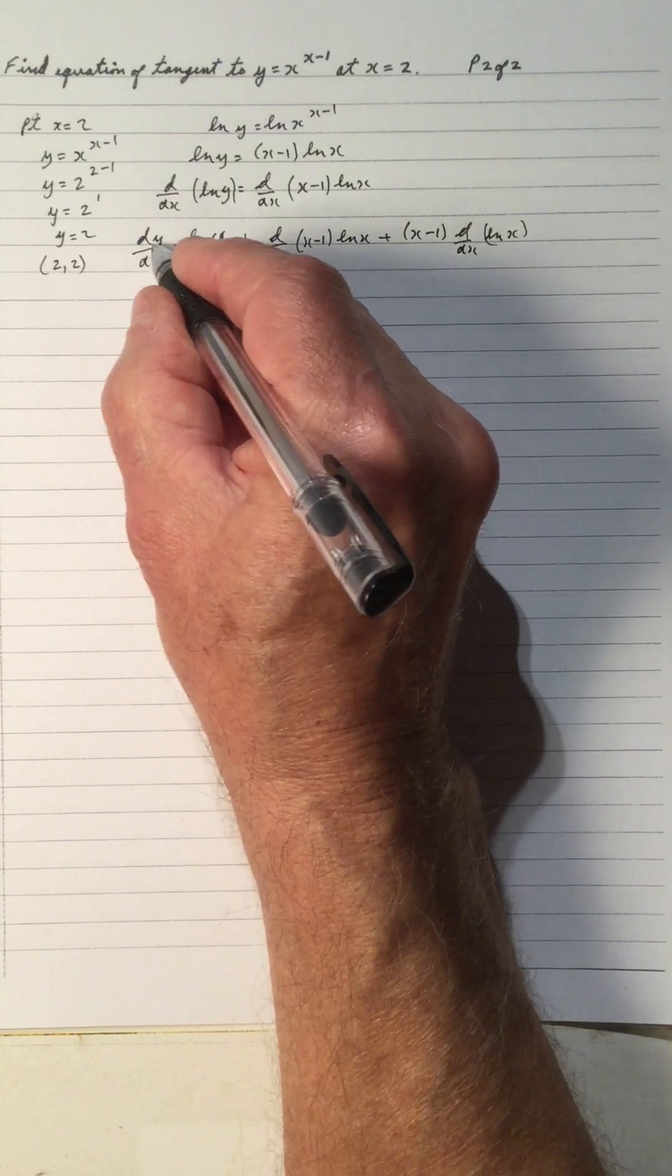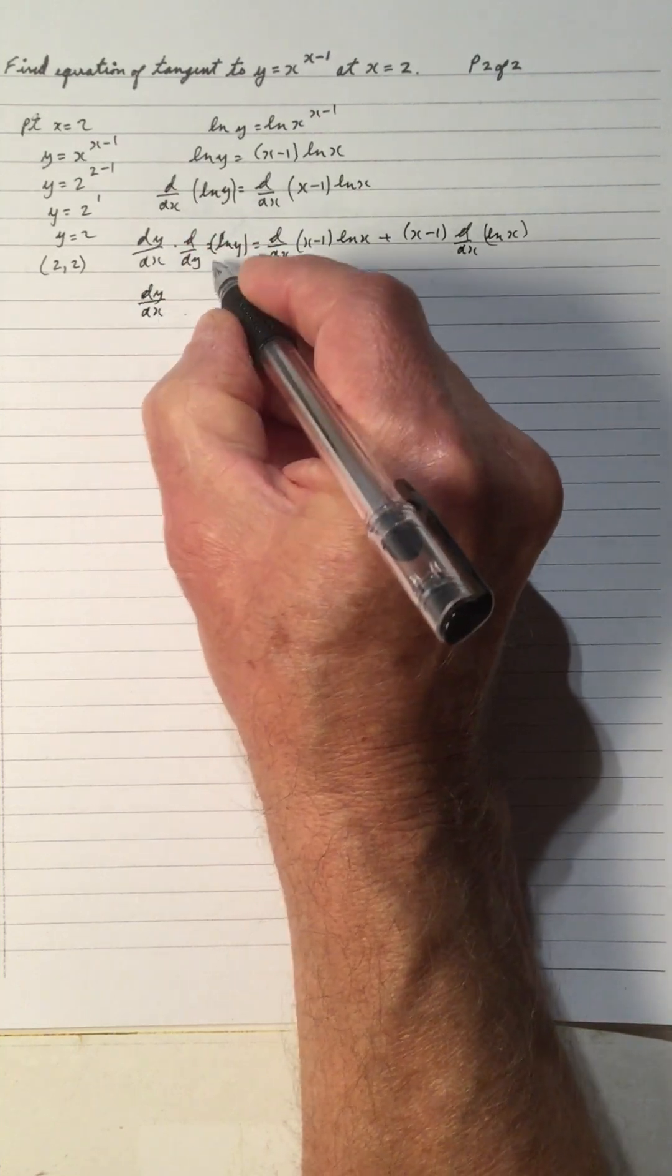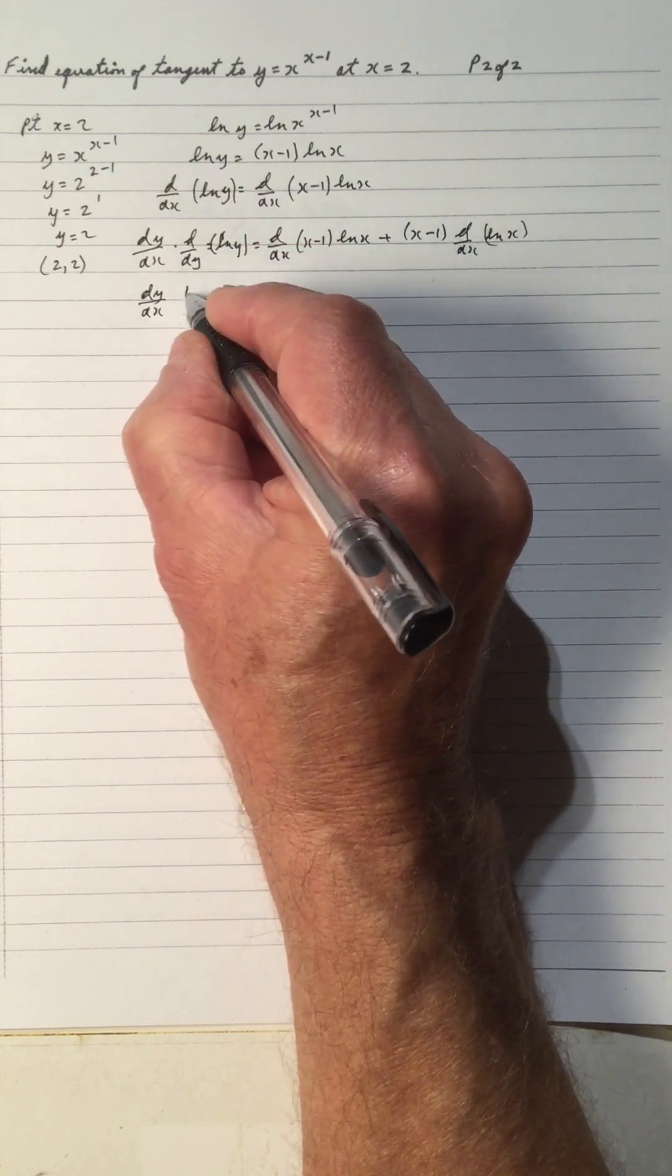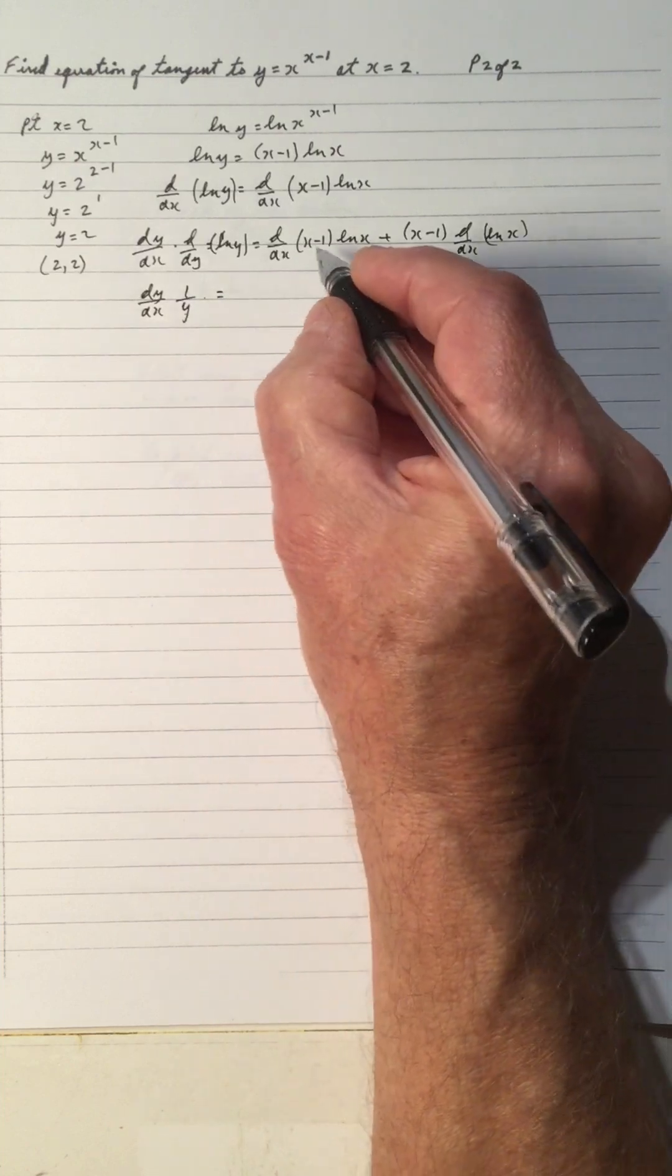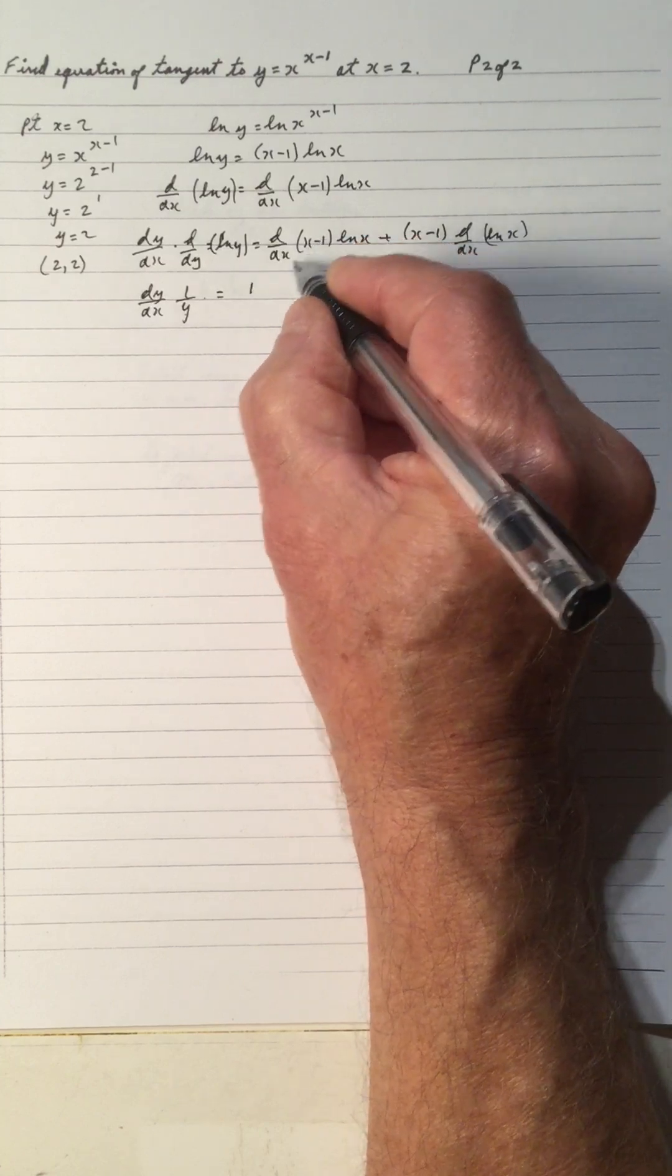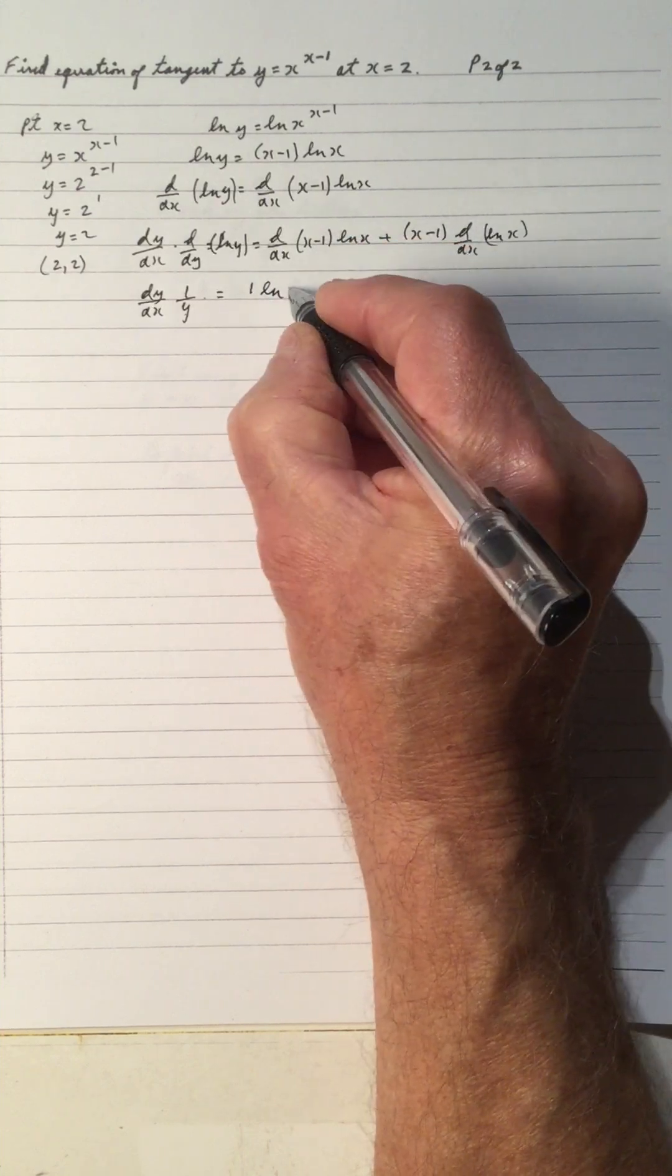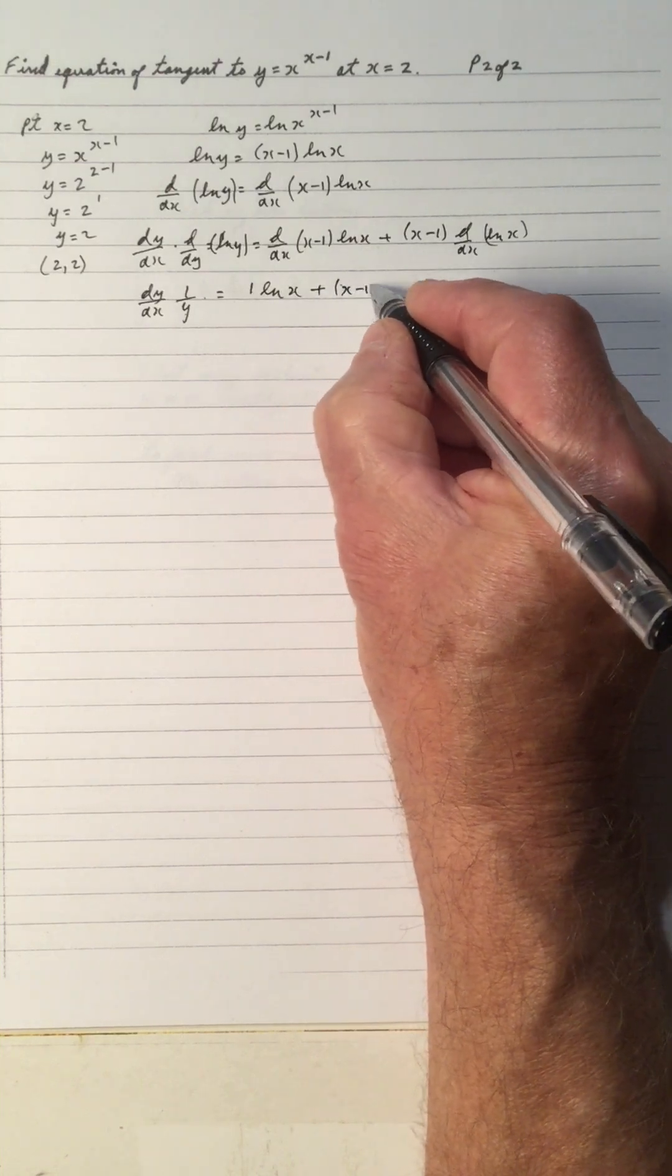So that becomes dy dx. Derivative of ln y in terms of y is 1 over y times dy dx. I've seen that many times. And d dx of x minus 1, derivative of x is 1, derivative of negative 1 is 0.